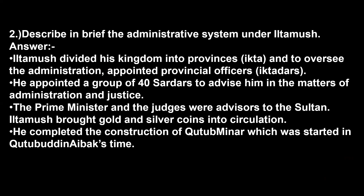Question: Describe in brief the administrative system under Iltutmish. Answer: Iltutmish divided his kingdom into provinces known as Iktas, and to oversee administration he appointed provincial officers called Iktadars. He appointed a group of 40 sardars to advise him in matters of administration and justice. The prime minister and the judges were advisors to the sultan.